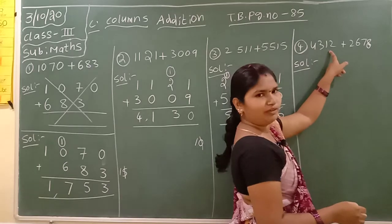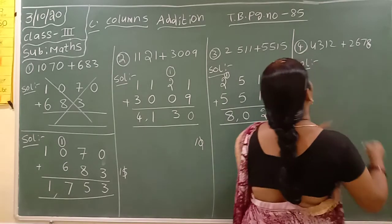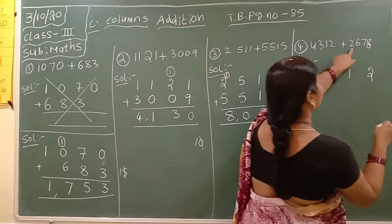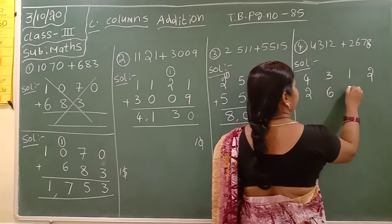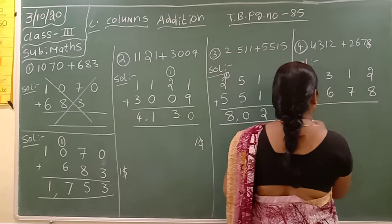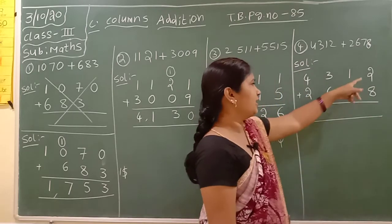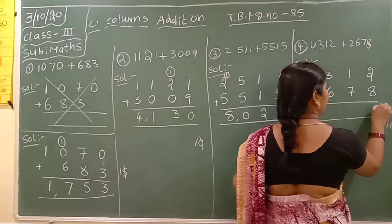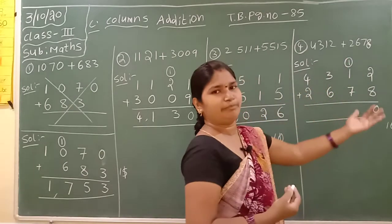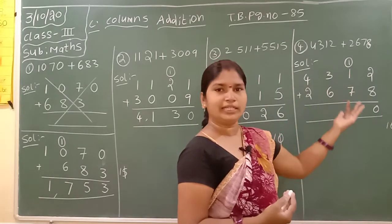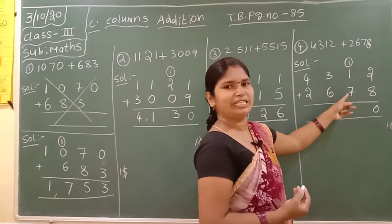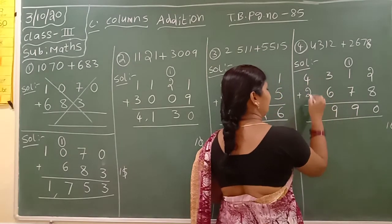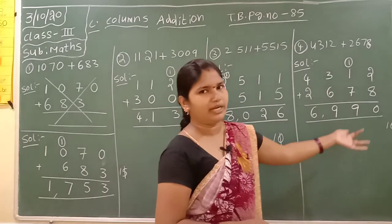Four thousand three hundred and two plus two thousand six hundred and seventy eight. First: four, finger gap, three, finger gap, one, finger gap, two. Next: two, six, seven, eight. Keep the addition symbol. Two plus eight is ten — write zero, carry one. One plus one is two. Two plus seven is nine. Six plus three is nine. Four place: six. The answer is 6979.